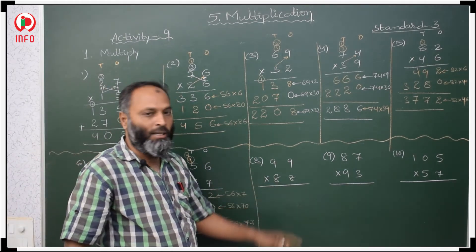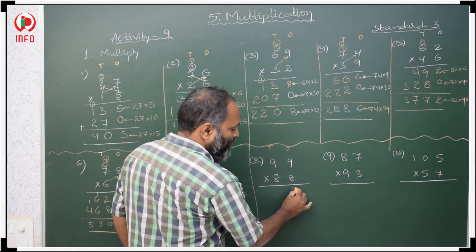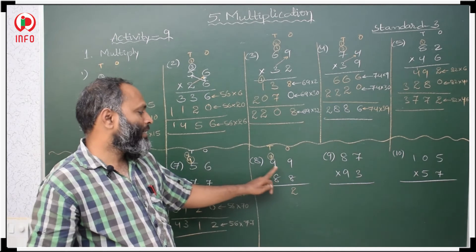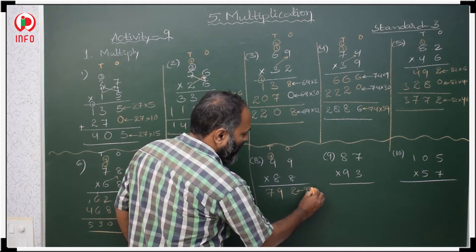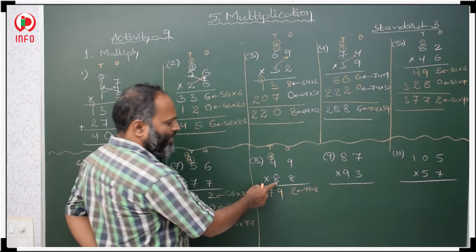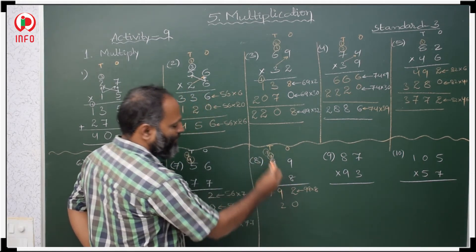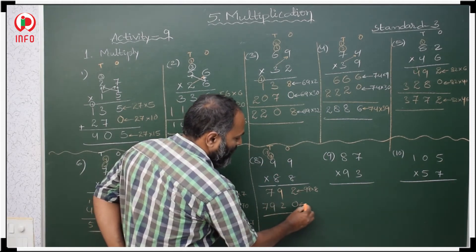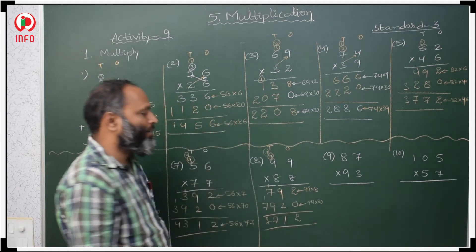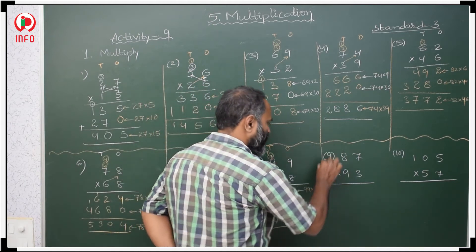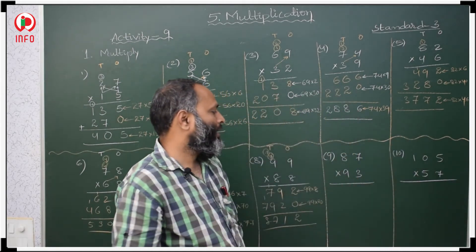Now 99 with 88. Ones place, tens place. 8 nines are 72, 72 plus 7 is 79. This is the product of 99 with 8. Again with 8 in tens place, first take 0. 8 nines are 72, carry 7; 8 nines are 72, 72 plus 7 is 79. This is the product of 99 with 80. Adding gives 8712 with result 87 with 93.